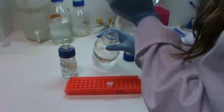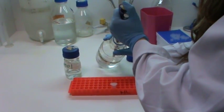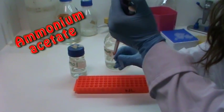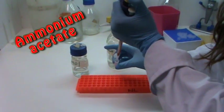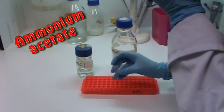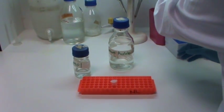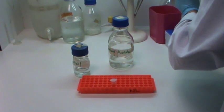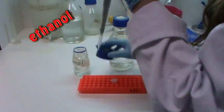I am now going to precipitate the DNA out of solution. First I am adding ammonium acetate. Ammonium acetate is a type of salt. Next I am adding ethanol. DNA is insoluble in ethanol.